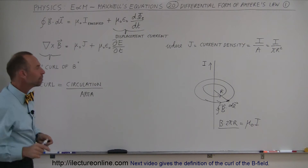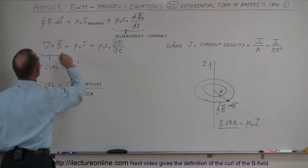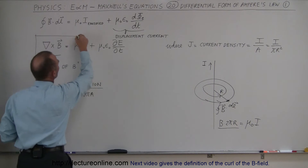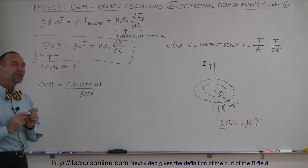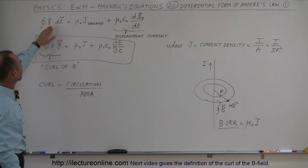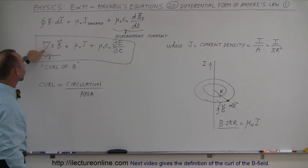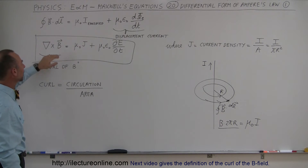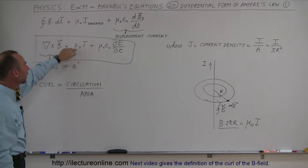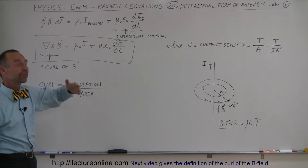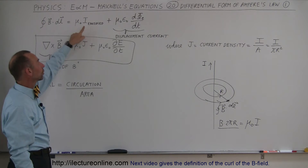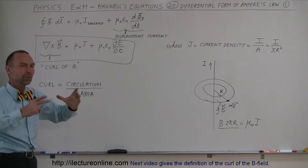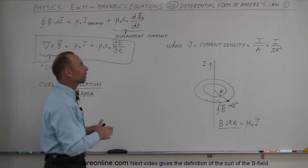Maxwell understood this and added it to Ampere's law to make it complete. How does that compare to the differential form? The differential form has roughly the same structure — instead of the integral, we have what we call a curl: ∇×B, equal to μ₀ — the permeability of free space — times the current density J. Instead of writing the current enclosed, we write the current density, which is the current per unit area.